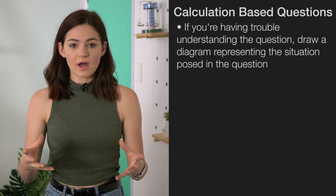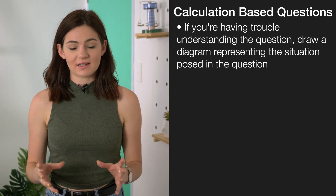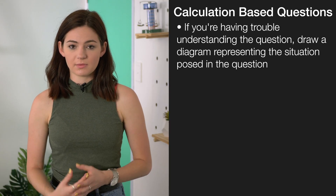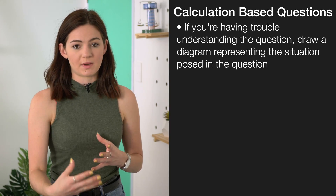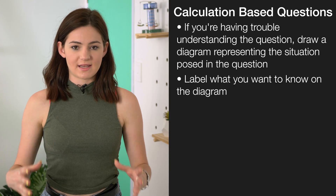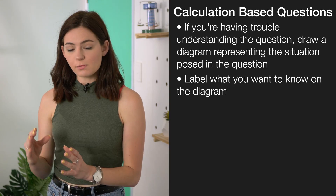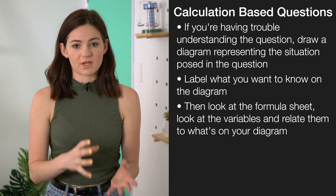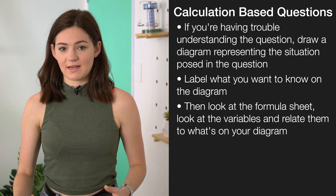For the calculation questions, you may look at the question and it may just click that you know exactly what you need to do. But in the case where you're not too sure, it's a really good strategy to draw a diagram or a picture to represent what is going on in the question. Then you can work on extracting all the information from the paragraph and put it into your picture, and label what you want to know. Then you can refer to your formula sheet, look at all the different variables and relate it to what's on your diagram, and get through to the next step.